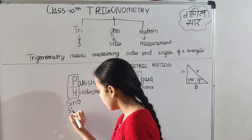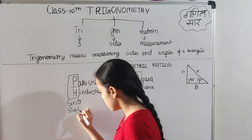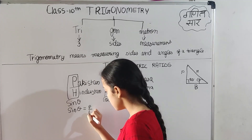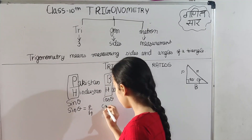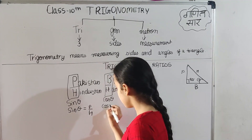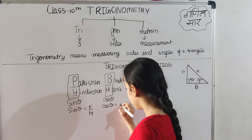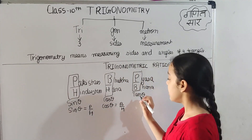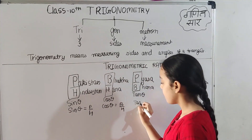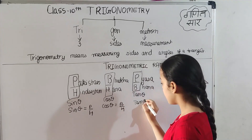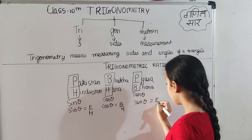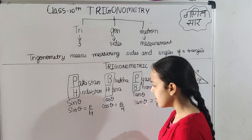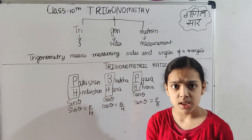Let's write this: sin theta equals P upon H, cos theta equals B upon H, and tan theta equals P upon B. You will see that there are only three trigonometric ratios so far. Where are the other three?